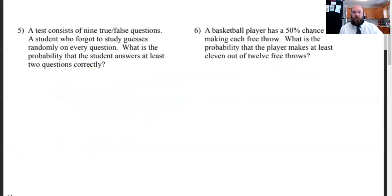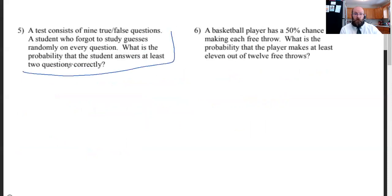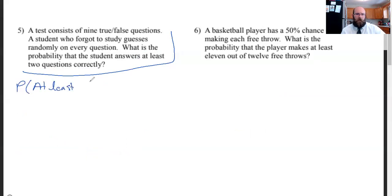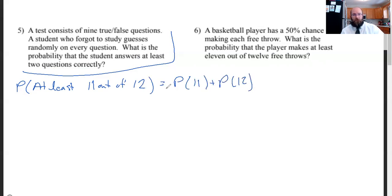A basketball player has a 50% chance of making each free throw. What is the probability that the player makes at least 11 out of 12 free throws? This one is going to be a little different. The last one was 'at least two,' so it could be two through nine — a lot of values. This one it's either he makes 11 or 12. So it's way easier to just calculate this directly. The probability of getting at least 11 out of 12 equals the probability of getting 11, plus the probability of getting 12.